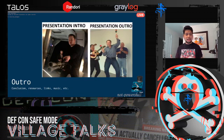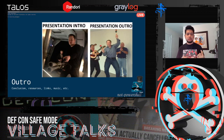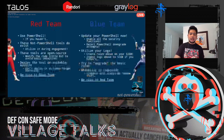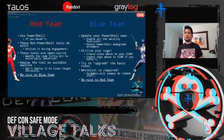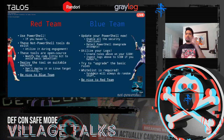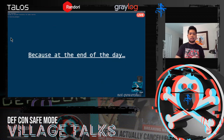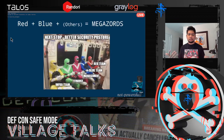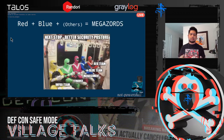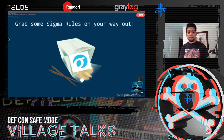That's pretty much the talk — a compressed version as mentioned. For red team and blue team: use PowerShell, update PowerShell for logging, etc. Be nice to each other — if you're a purple team, you can take both sides. At the end of the day, we're all in the same boat and want to protect our organizations and upgrade our security posture. Don't forget to grab the Sigma rules on your way out — I made a lot of Sigma rules just for this presentation.